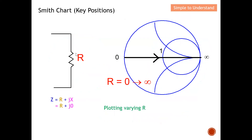Next, I'm going to discuss the three components: R, L, and C — how to plot them onto the Smith Chart. For a purely resistive value, the reactance is zero. So for a pure resistor, the resistance can vary from zero to infinity. On the Smith Chart, the extreme left is a resistance of zero (short circuit).